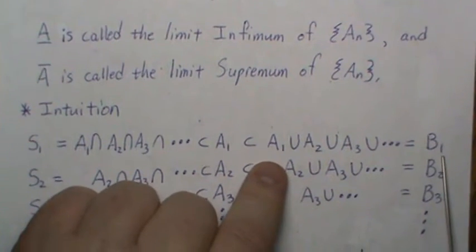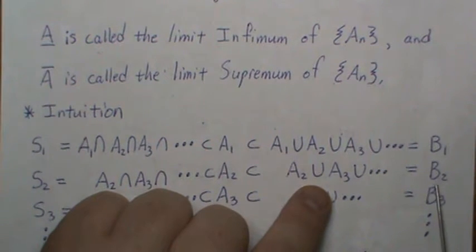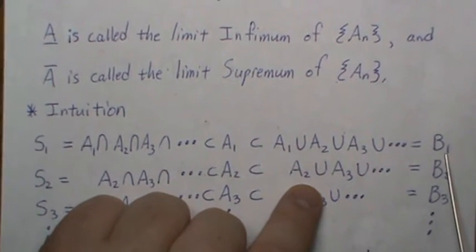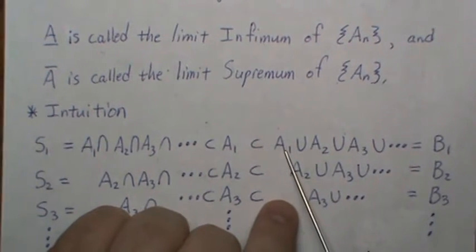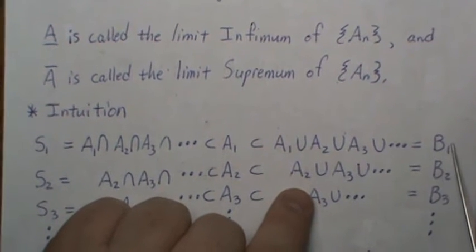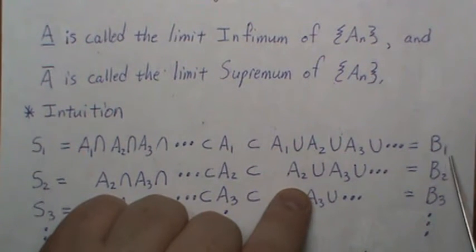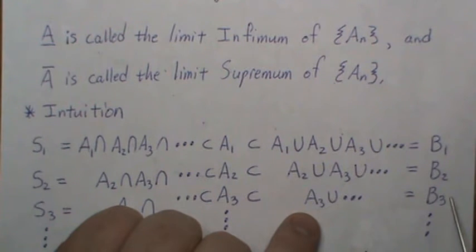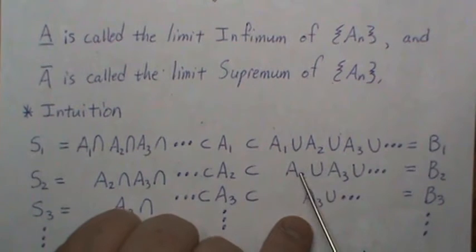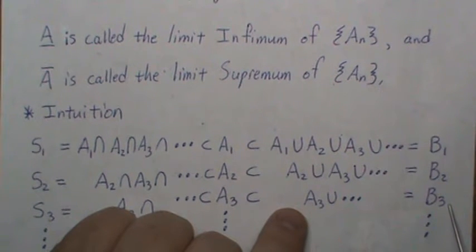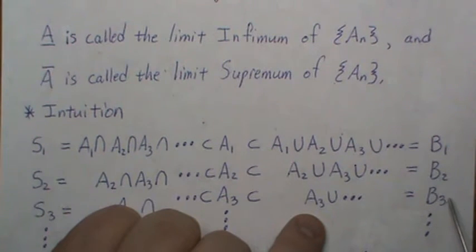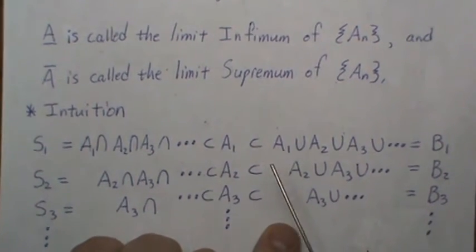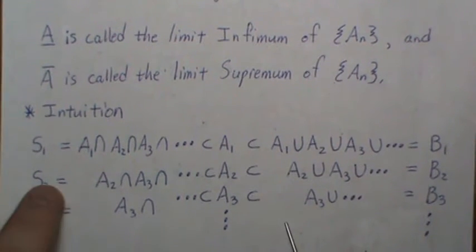Now let's think about these sequences. Consider B_1 and B_2: B_1 is the union starting at A_1, so B_1 can only be bigger if there are elements in A_1 not in B_2. Going from B_1 to B_2 we decrease the set. The same applies going from B_2 to B_3 — B_2 involves one more set in the union, so it can only be bigger. Therefore B_1, B_2, B_3 is a decreasing sequence of sets.